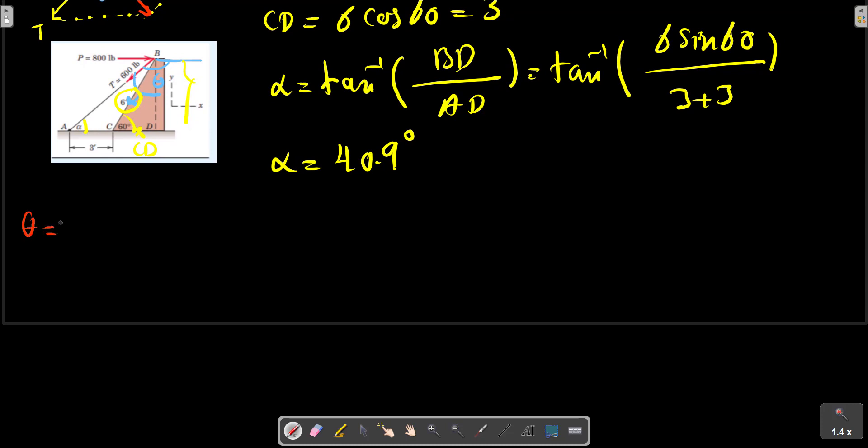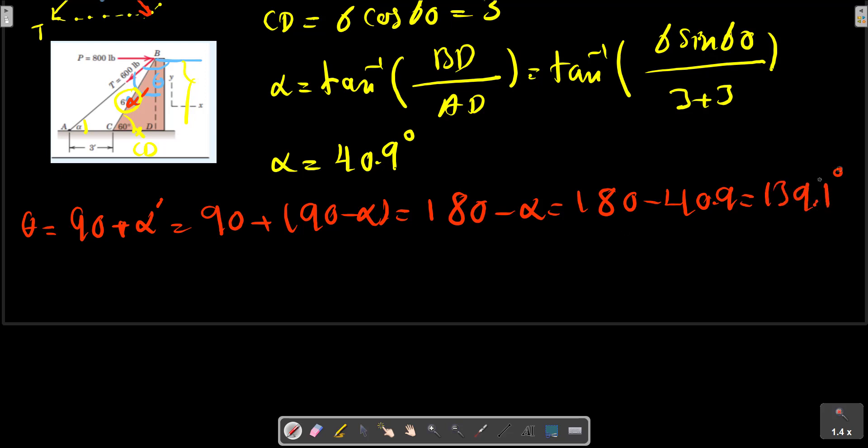Theta is at first alpha prime, 90 plus alpha prime is 180 minus alpha equals 180 minus 40.9 equals 139.1. So R can be calculated.